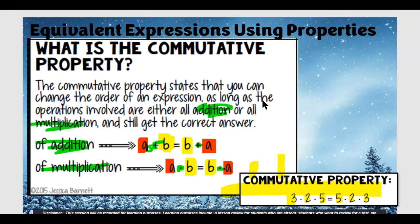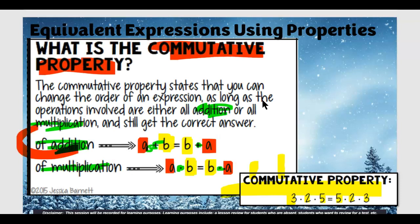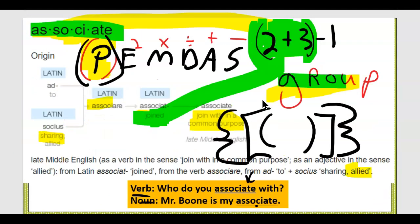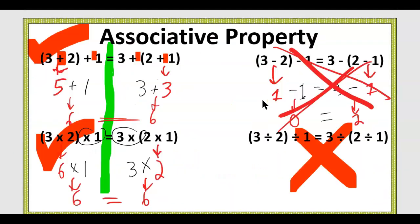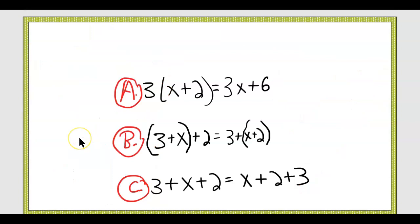Didn't we say commutative property only works with addition and multiplication? Well, go figure — associative property only works with addition and multiplication too.